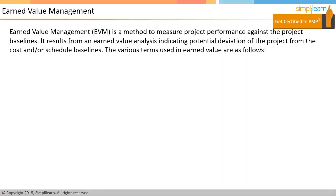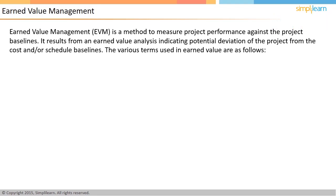Earned value technique is an excellent way to track project progress against the project plan. It is a method of measuring project performance objectively and comparing it against the project baseline. Results from an earned value analysis indicate deviation of the project from cost and schedule baselines. A baseline is the initial approved value along with approved changes.